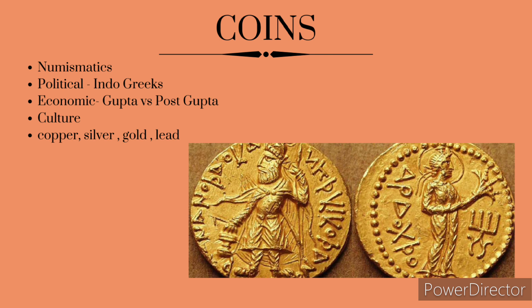Coins were made up of several materials — copper, silver, gold, and lead — and the material used depended upon the empire being studied. An analysis of coin materials, although it may not always yield path-breaking information, does reflect the preference of the king as well as the availability of materials within the empire.